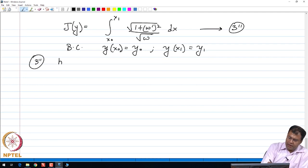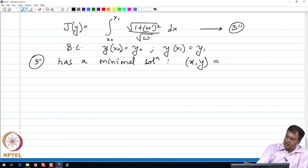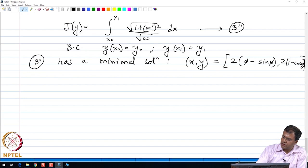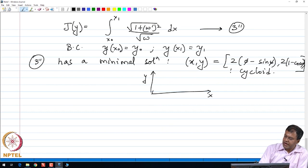3 prime has a solution, has a minimal solution, which is a cycloid. I am going to give a parametric representation of this cycloid, which is as follows: 2 phi minus sin phi comma 2(1 minus cos phi). Cycloid. Why the name cycloid? If we try to track the motion, the locus of these points on the X Y plane, we see that the points are such that the locus is such that they are located at the rim of a bicycle wheel, and hence the name cycloid.